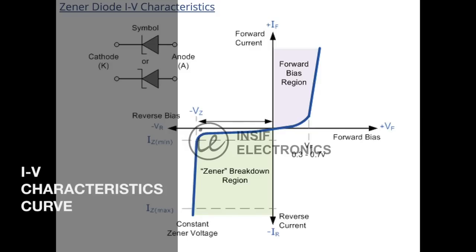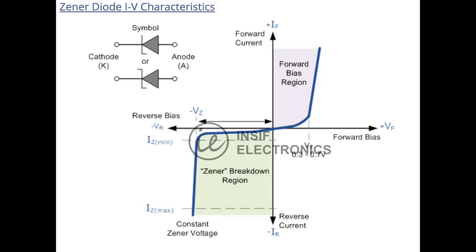When the Zener diode is in reverse biased, a small amount of electric current flows throughout the diode. However, once the applied voltage reaches a value called Zener voltage, the voltage does not increase a lot, so it can be considered constant. The current that passes through the Zener diode can vary in a large range of values, but the voltage on the diode is almost the same. This region is called the region of voltage regulation.